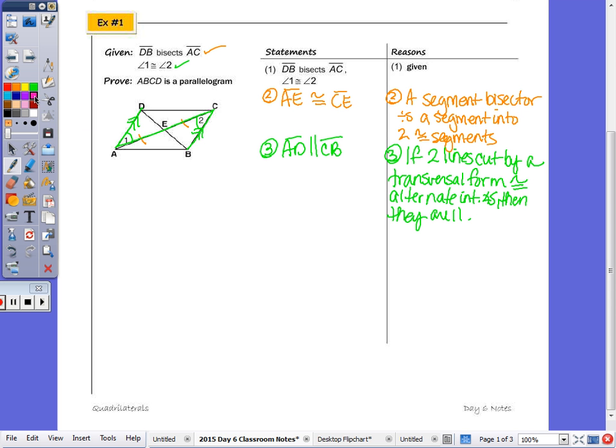So when you're doing these proofs, you should look to see if you can get any congruent triangles, so that you can use parts of those congruent triangles with CPCTC to get a pair of angles congruent, a pair of sides congruent, so that you can use one of the properties.